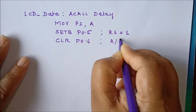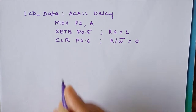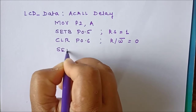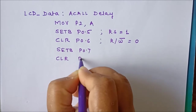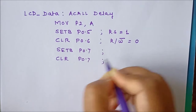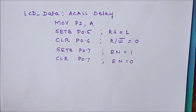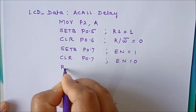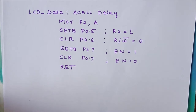With R/W set to 0, we perform the write operation. We then send the high-to-low enable pulse again using SETB P0.7 followed by CLR P0.7. This process writes data to the data register and the character is displayed on the LCD. The last instruction of the LCD_data subroutine is the RET instruction.